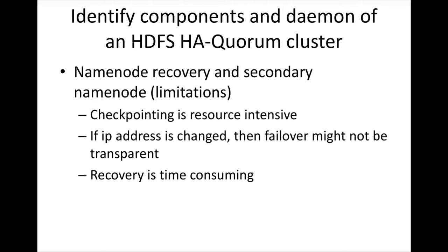You have to manually deploy the configuration files such as the core-site.xml file on all the nodes in the cluster. Also, the recovery process is time consuming — the fs image has to be restored and the edit logs have to be applied to complete recovery. Most importantly, above all these things, the name node is a single point of failure. If it fails, everything comes to a halt until it comes back up, and hence bringing up the name node as quickly as possible is significant.